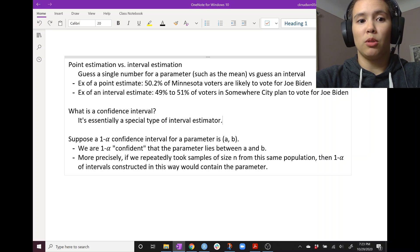So to give an example of a point estimate, let's think about the percentage of Minnesota voters who plan to vote for presidential candidate Joe Biden. A point estimate would be 50.2% of Minnesota voters are likely to vote for Joe Biden. And this statistic is from the blog 538 as of today.